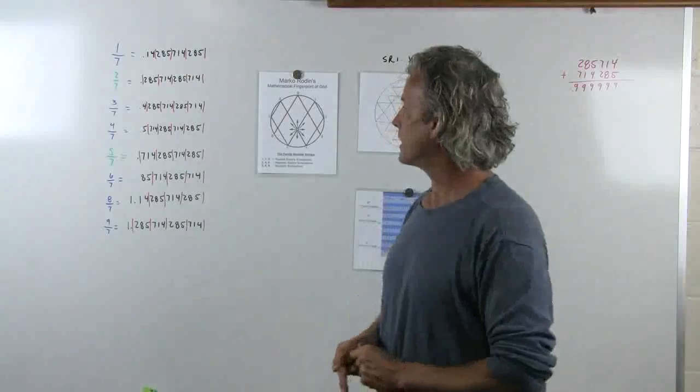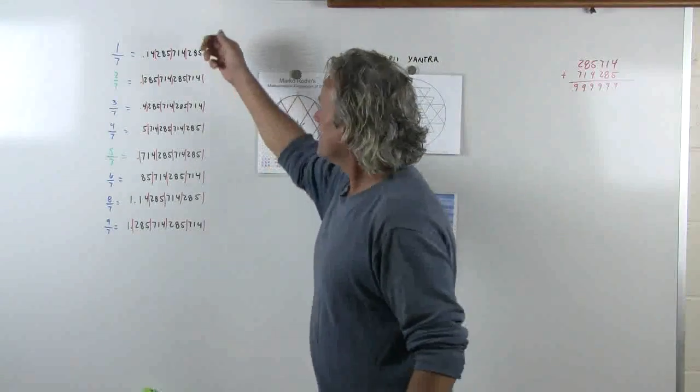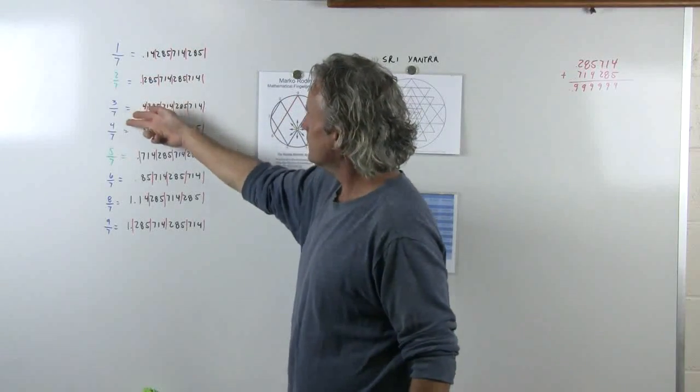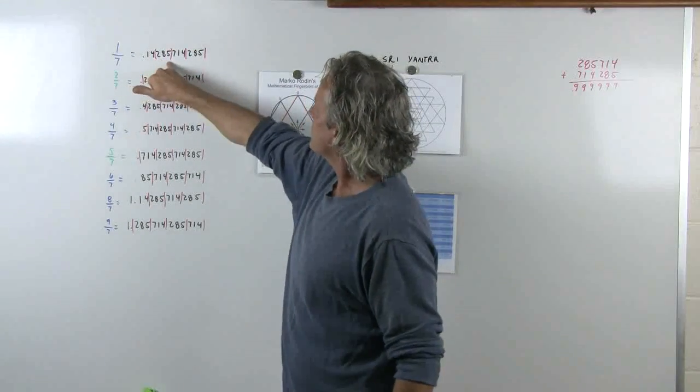One of the things that I found is that if you take any number and divide it over 7 - 1 over 7, 2 over 7, 3 over 7, and so forth - you get the family number groups.